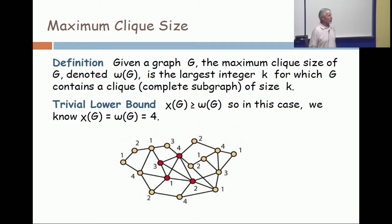One cannot color this with three colors because the red vertices form a clique of size four. So the basic inequality is that the chromatic number is at least as large as the maximum clique size, and that's just pigeonhole. In some instances it is tight. Here is an example where the chromatic number and maximum clique size are both four.